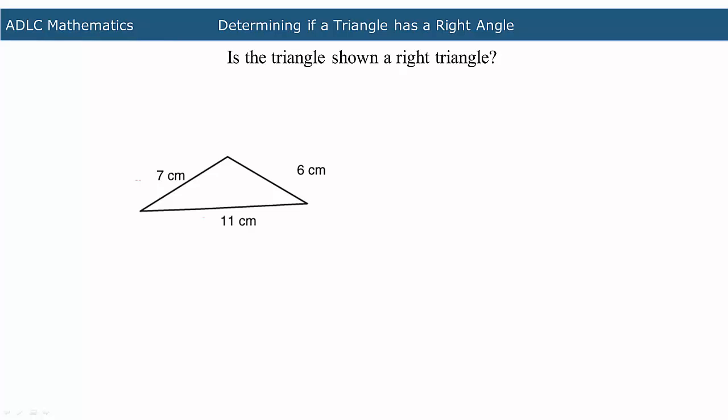Now we will determine if this triangle is a right triangle using a different method. First, label the sides of the triangle. Make sure the longest side is labeled C.